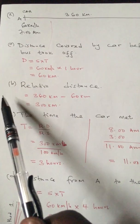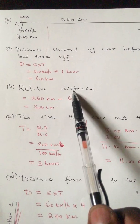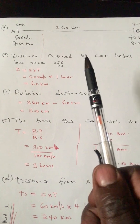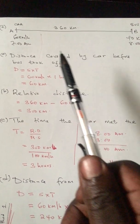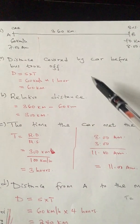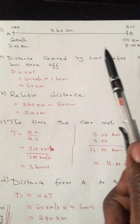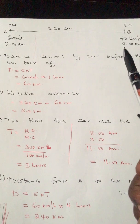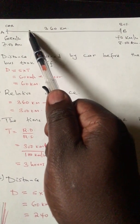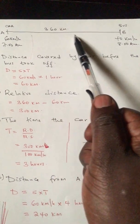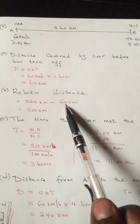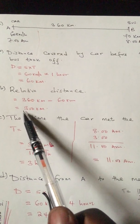Question B: calculate the relative distance. Relative distance is the distance between two bodies just before both of them begin to move. At 8 a.m., both bodies are moving for the first time. At that point, the car had already covered 60 kilometers. So the remaining distance is what we call relative distance: 360 minus 60, which equals 300 kilometers.